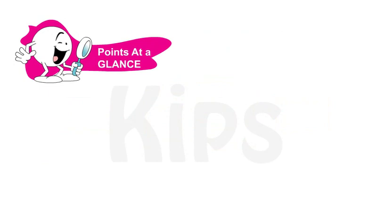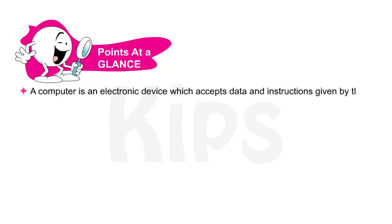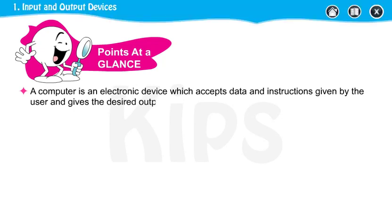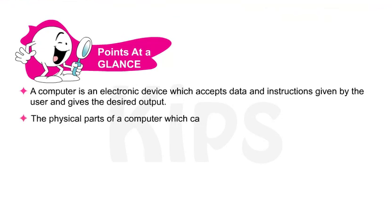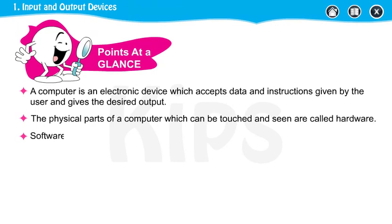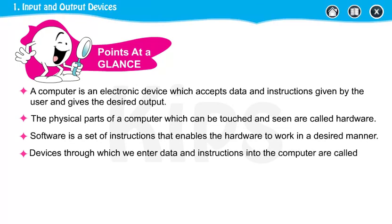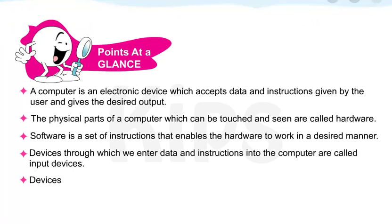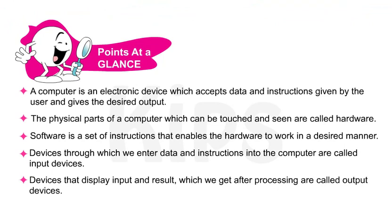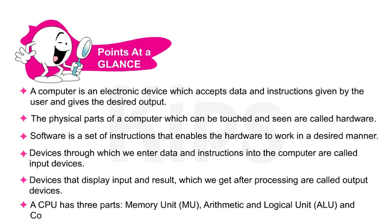Let us quickly glance through the key points discussed in this chapter. A computer is an electronic device which accepts data and instructions given by the user and gives the desired output. The physical parts of a computer which can be touched and seen are called hardware. Software is a set of instructions that enables the hardware to work in a desired manner. Devices through which we enter data and instructions are called input devices. Devices that display input and results after processing are called output devices. A CPU has three parts: Memory Unit (MU), Arithmetic and Logical Unit (ALU), and Control Unit (CU).